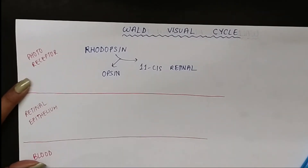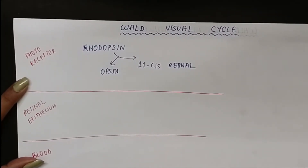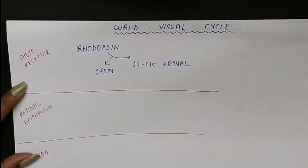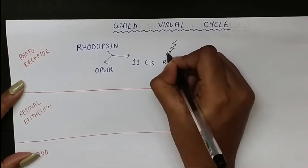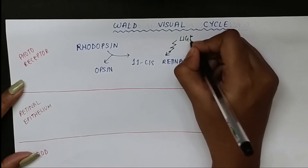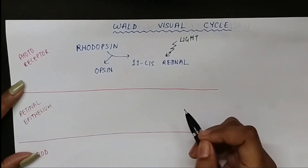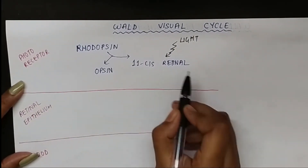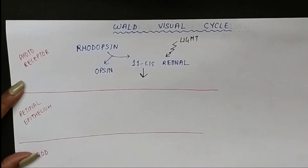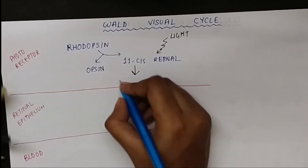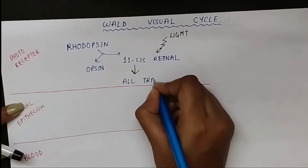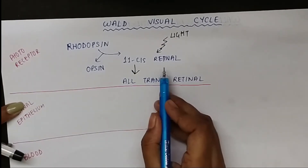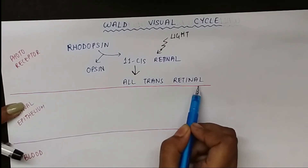Starting with the steps: first we have 11-cis retinal. When light comes, photo-isomerization occurs and visual excitation occurs, in which 11-cis retinal changes into all-trans retinal.